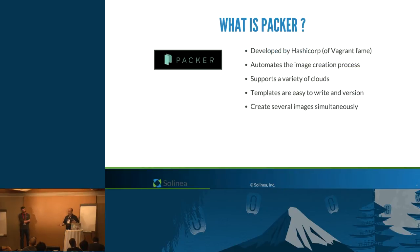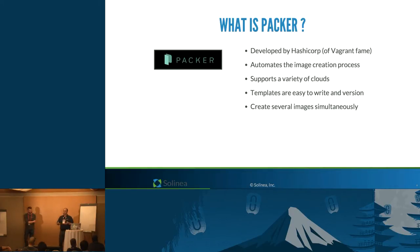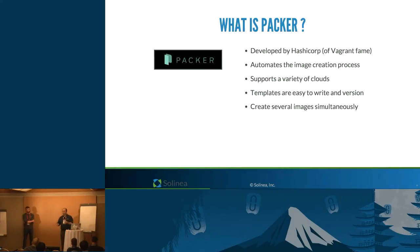So what is Packer? Many people have used Vagrant before — Packer is developed by the same group at HashiCorp. It automates the image creation process across a wide variety of clouds: OpenStack, VMware, Amazon, Google Compute Engine, and even Docker images. Templates are easy to write and version control, and you can actually create several images at the same time. If you're supporting a hybrid environment and need to output images for two cloud infrastructures, you can do that with Packer. This is how you get to immutable infrastructure — you know what your infrastructure looks like all the time.